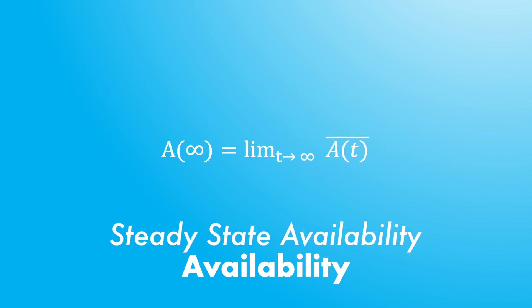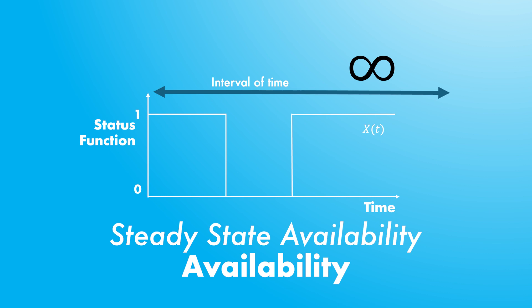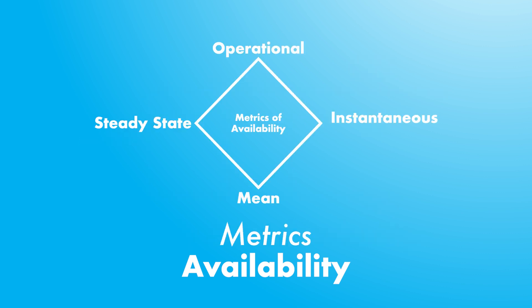The steady-state availability of the system is the limit of the mean availability when time tends to infinity. It describes the mean availability of the system when we analyze an infinite amount of operating time.